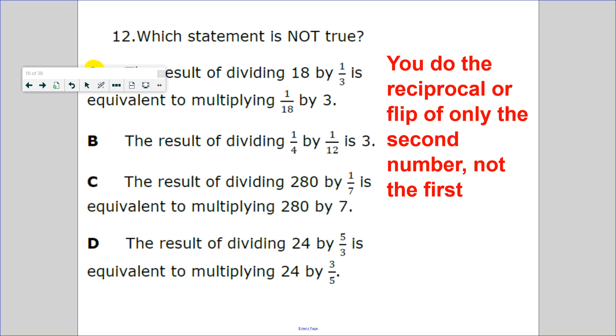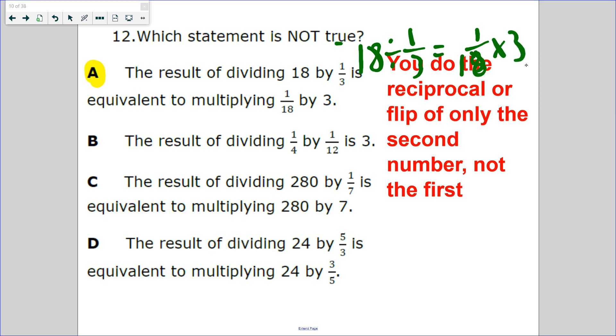Number 12: which statement is NOT true? The result of dividing 18 by 1 and 1/3 is equivalent to 18 times 3. No, it's not. When you're dividing, you have to do the reciprocal of 1/3, so it'll be 18 times 3. We know that's one wrong.